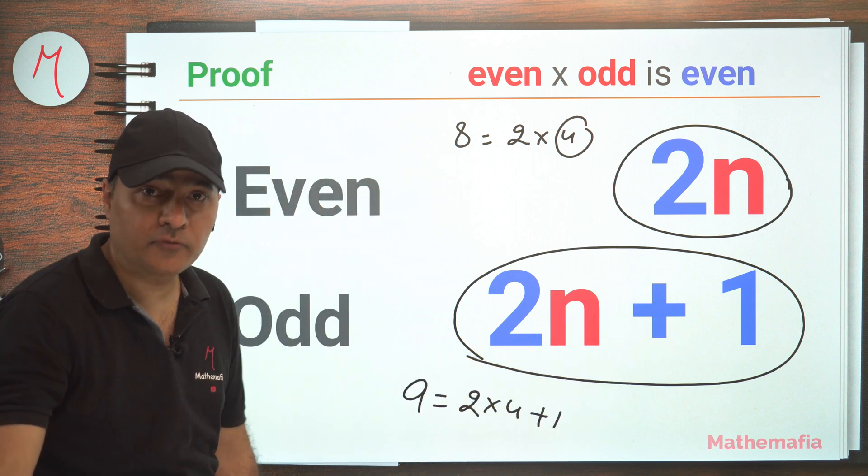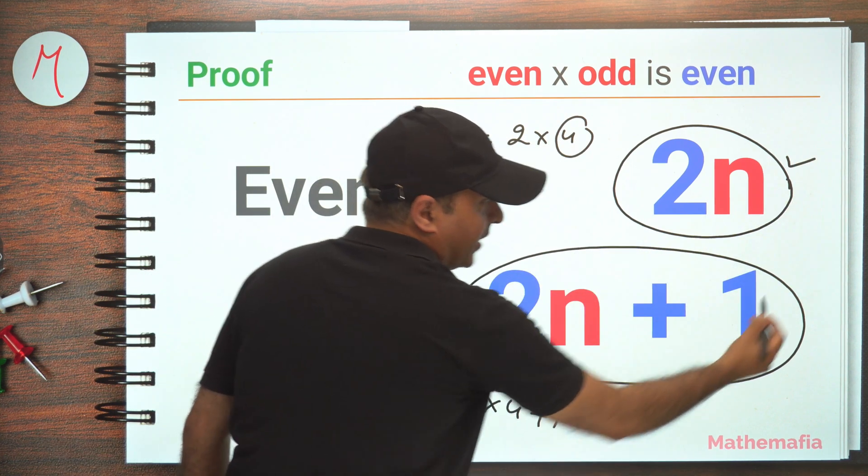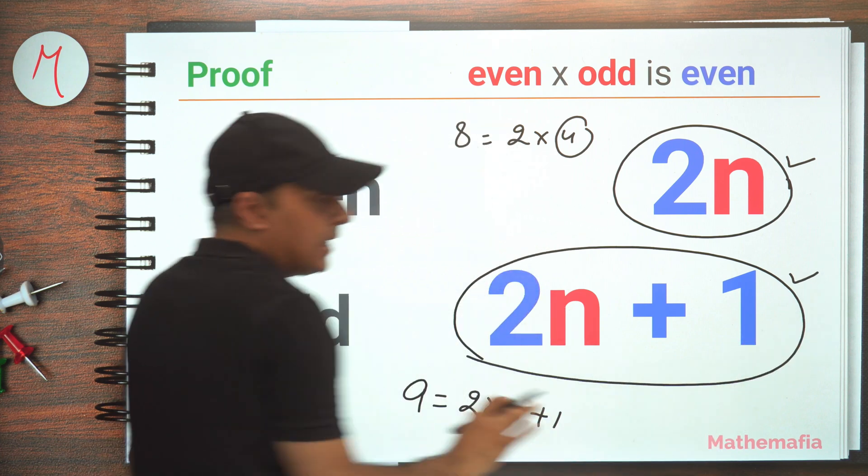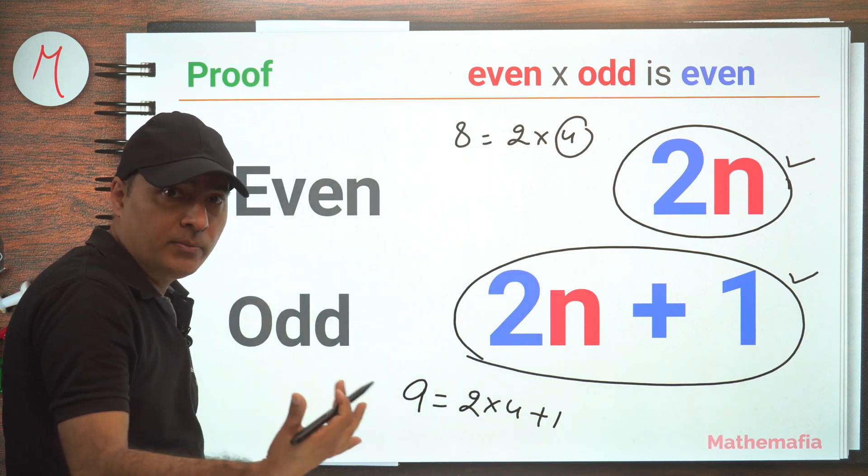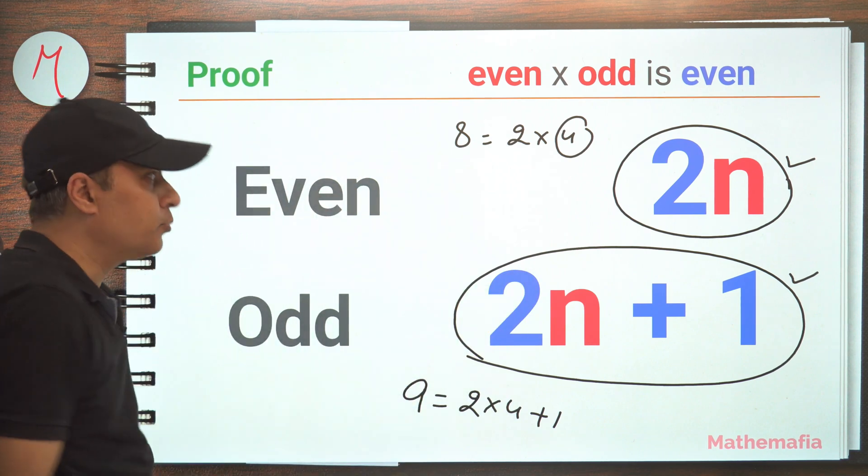Now what we have to prove is that if we multiply one such number with another number which is of this form, then the output will be of this form. So that's what we have to prove. Let's prove it quickly.